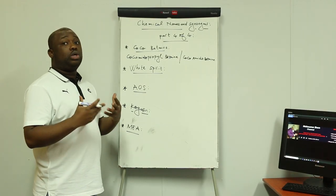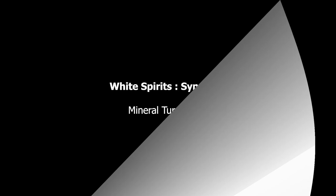The next chemical is white spirit. What is another name of white spirit? Another name of white spirit is mineral turpentine.